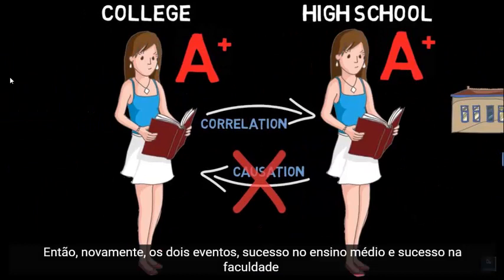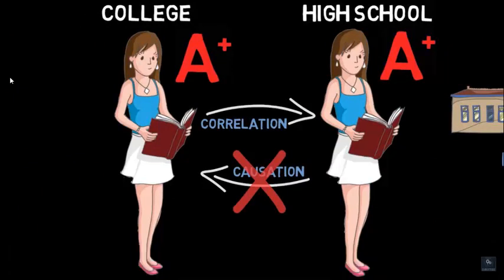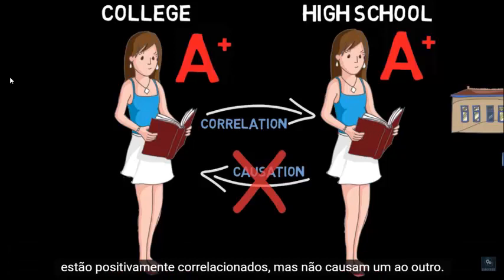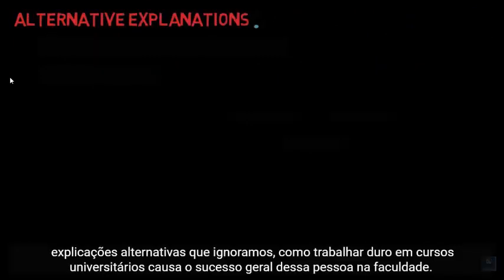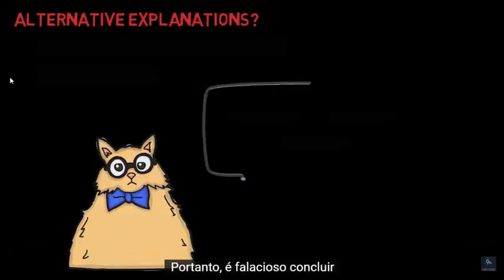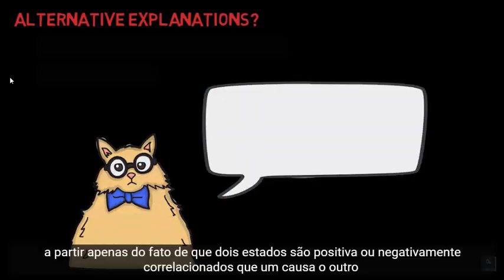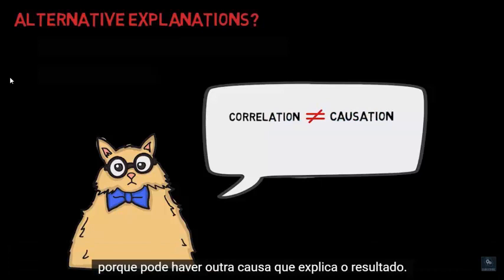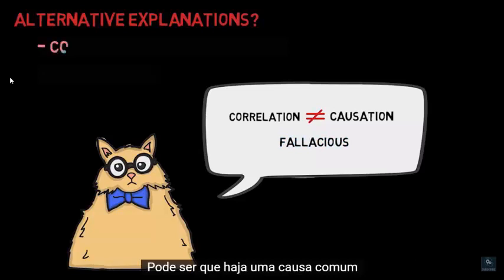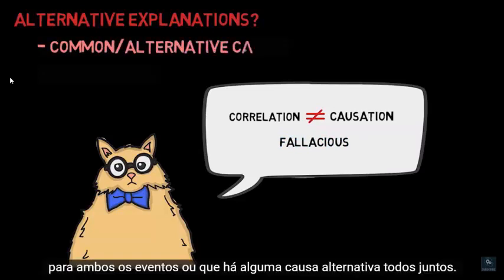So again, the two events — high school success and college success — are positively correlated, but they do not cause one another. When two events are correlated, it may seem that one causes the other, but there may be alternative explanations we've ignored, like working hard in college courses causing overall success. It's fallacious to conclude, from only the fact that two states are positively or negatively correlated, that one causes the other, because there may be another cause — a common cause for both events, or some alternative cause altogether.